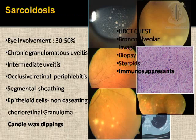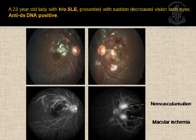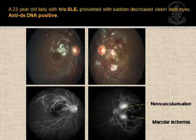Pan-uveitis with retinitis and vasculitis — acute retinal necrosis is a potentially blinding disorder, mostly unilateral but bilateral cases are also seen, caused by the herpes group of viruses. The American Uveitis Society proposed diagnostic criteria in 1994. Patients typically present with acute unilateral pan-uveitis with large keratic precipitates and raised IOP. Look for severe vitreous cells, disc edema, and peripheral necrotizing retinitis with vasculitis, which leads to the diagnosis of acute retinal necrosis.